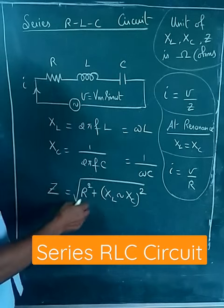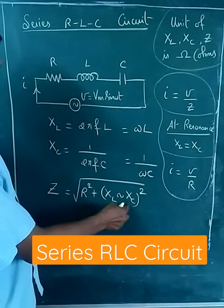Impedance Z is equal to the square root of R² plus (XL - XC)².